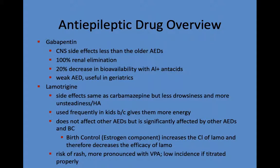Gabapentin is not used as much for epilepsy anymore since better options exist, but it may be useful in geriatric patients or those with comorbid psychiatric disorders like anxiety. Lamotrigine has mostly similar side effects to carbamazepine but is frequently used in children as it may give them a little more energy. It has very few drug interactions — basically just birth control and valproate — and is generally well tolerated compared to other antiepileptic drugs.